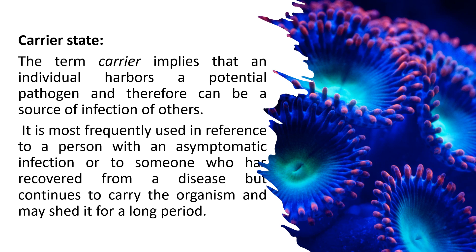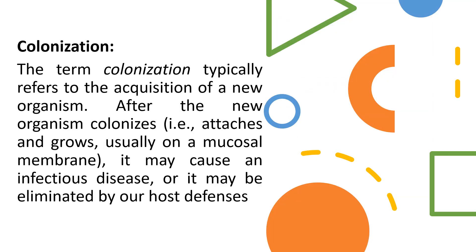The microbiome also exists within the lumen of the gastrointestinal tract. The next important term is carrier state, which means that an individual harbors a potential pathogen and can therefore be a source of infection of others. It is most frequently used in reference to a person with an asymptomatic infection or someone who has recovered from a disease but continues to carry the organism and may shed it for a longer period. Colonization refers to the acquisition of a new organism; after the organism colonizes by attaching and growing, usually on a mucosal membrane, it may cause infectious disease or may be eliminated by host defenses.